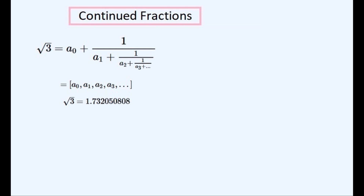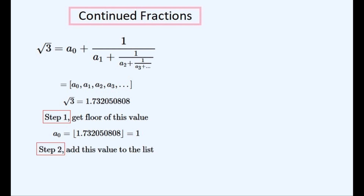So we'll find it out using real numbers in the calculation so as to learn a very simple way to find it first, so we can build on it to learn a better method later. The first step is to get the floor function of this value, which is equal to the integer that is less than or equal to it. In this case the floor of this value is 1, since with the floor function we're eliminating all of the numbers after the decimal point. Then the next step is to add this number to the list, so this is what the continued fraction looks like so far. The next step is to get the frac of this same number, which is the value of everything after the decimal point, or this number minus its floor value.